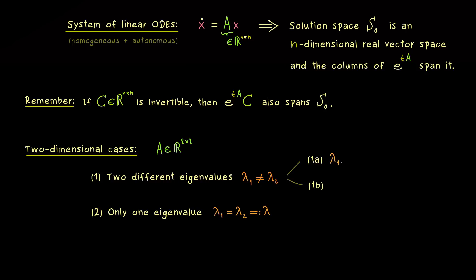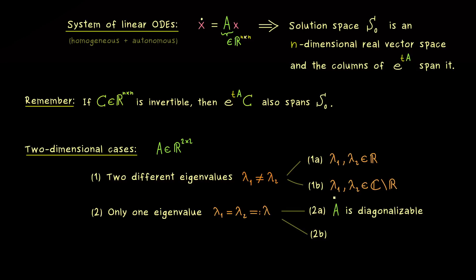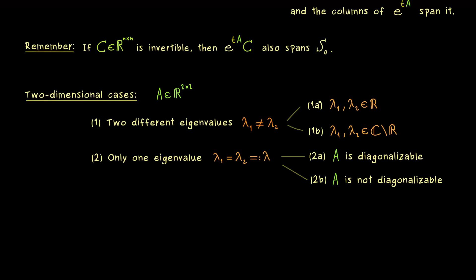Even a matrix with real entries can have complex eigenvalues. However, for a 2-times-2 matrix, the two cases cannot be mixed: if one eigenvalue is not real, the other must also be not real. Therefore, in the second case (only one eigenvalue), that single eigenvalue lambda must be real. In the second case, the subdivision is whether the matrix is still diagonalizable. In the first case, A is always diagonalizable because we have enough eigenvectors. But when there is only one eigenvalue, the eigenspace can be only one-dimensional, making A non-diagonalizable. These are the four possibilities for matrix A, and we will discuss them in this order.